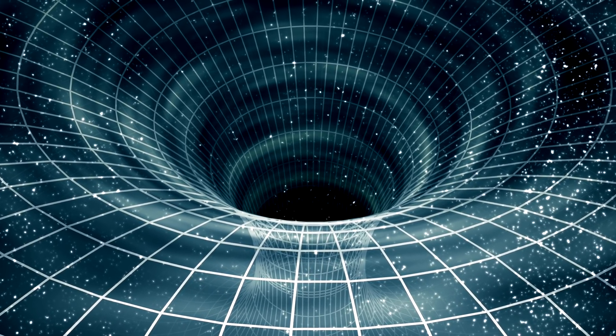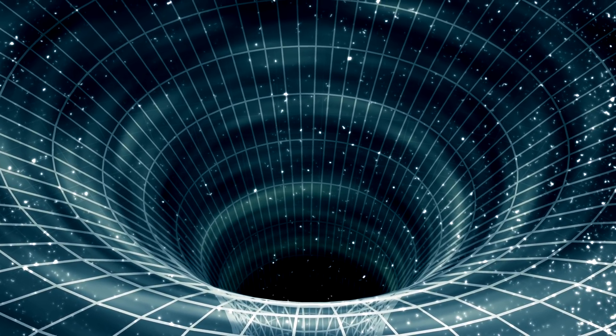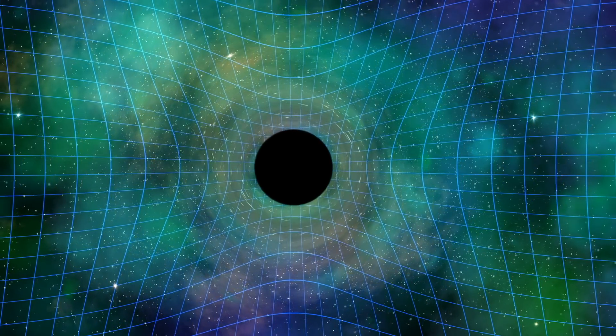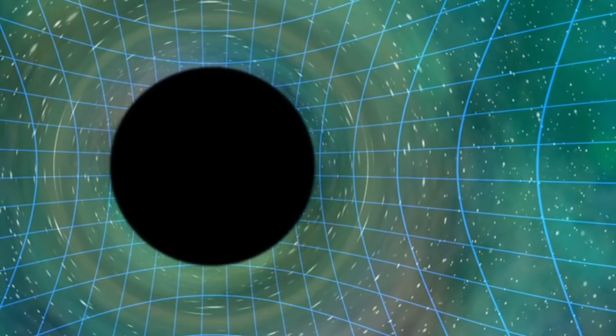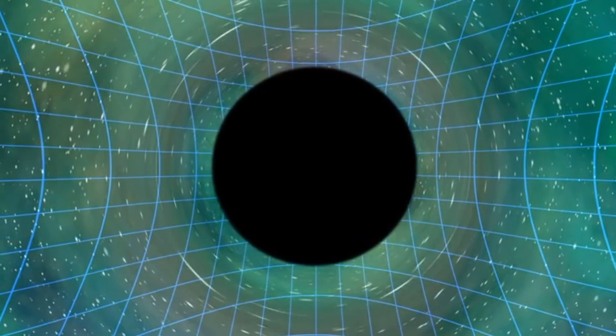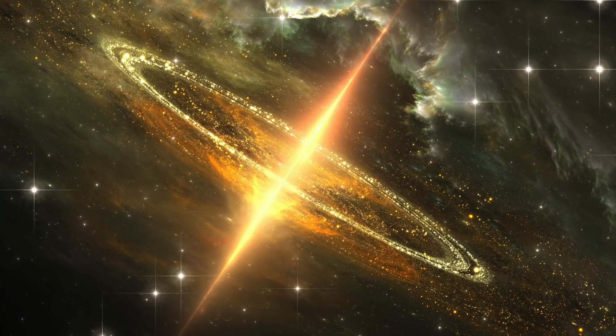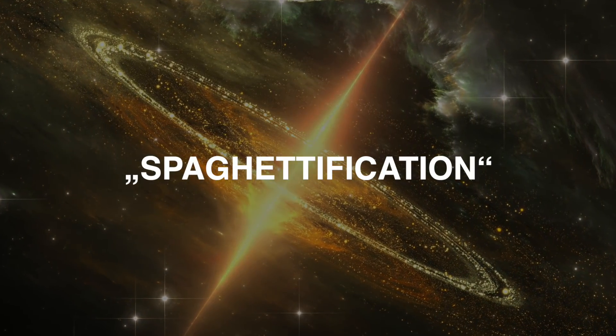When we imagine how a black hole swallows up another object, many people imagine this process as a sequence that can be compared to our earthly vacuum cleaning. In reality, however, black holes have the property of initially strongly expanding or stretching certain objects due to their gravitational force. This process, in which the object in question resembles an elongated noodle at the end, is appropriately called spaghettization.